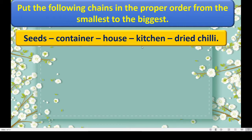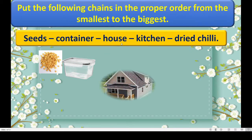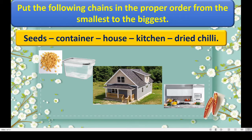First we will look at the pictures of these things. Seeds are very small. Then container — a box in which we can keep the seeds or chilies, etc. Then house. Then kitchen — where mummy prepares food for the people of the house. Then dried chili — they are red in color, green chili and red chili. Now we have to arrange these things in order from smallest to the biggest.